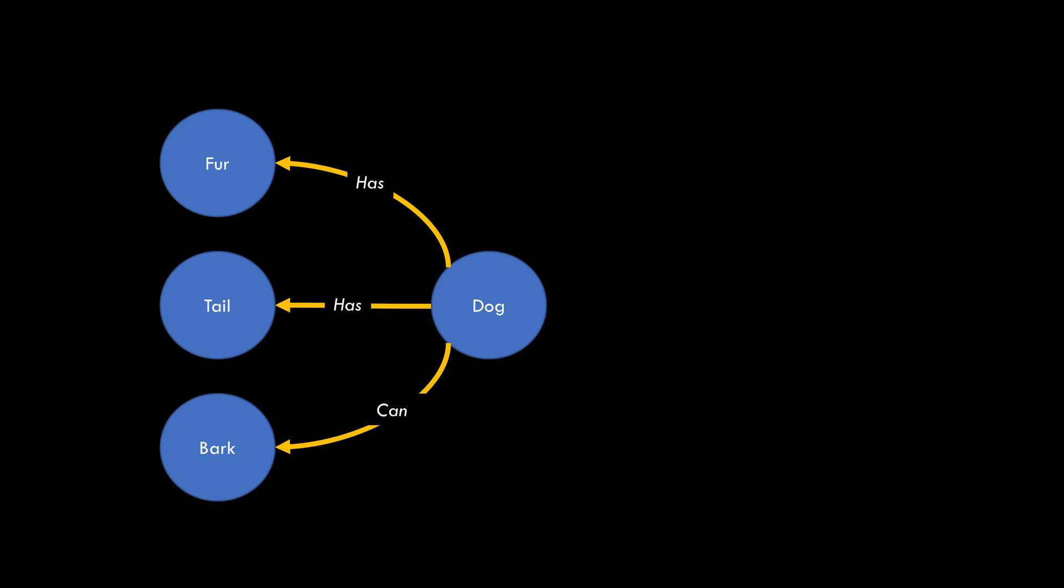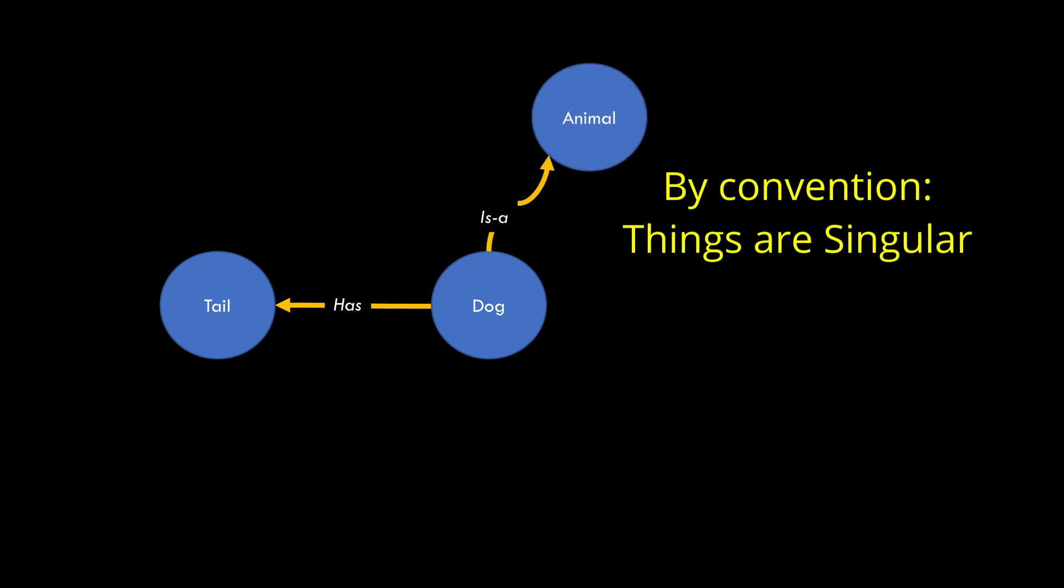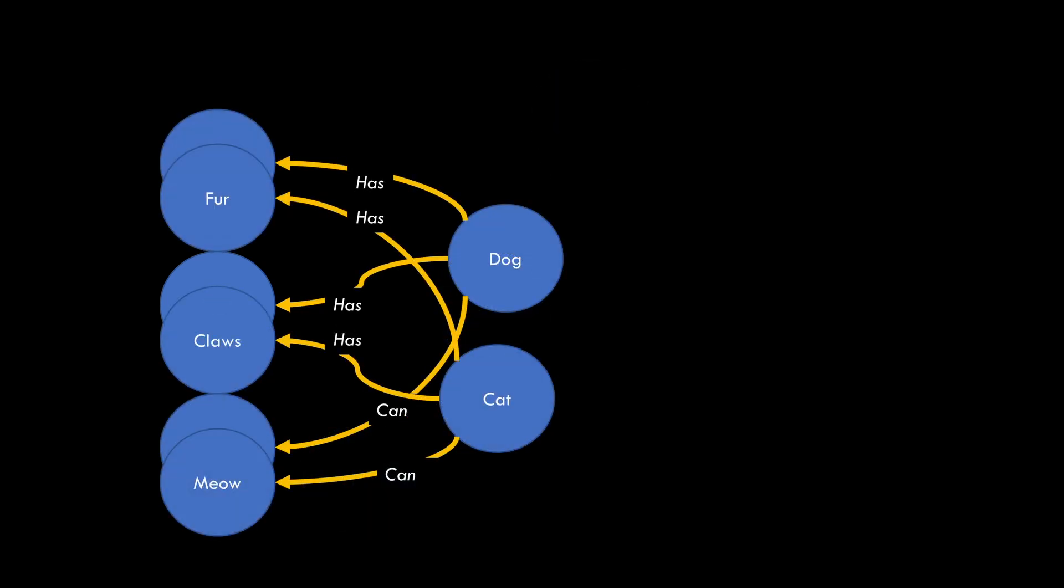The relationships relate things to each other. So we can represent, for example, dogs have tails, dogs are animals, and Fido is a dog. Each relationship has a confidence value or weight, just as in the neural network. And any set of attributes can be used to search for things, again, in a manner very similar to a feed-forward neural network.